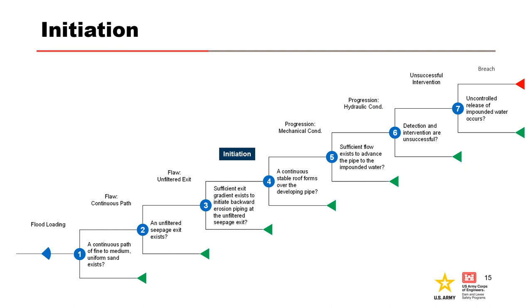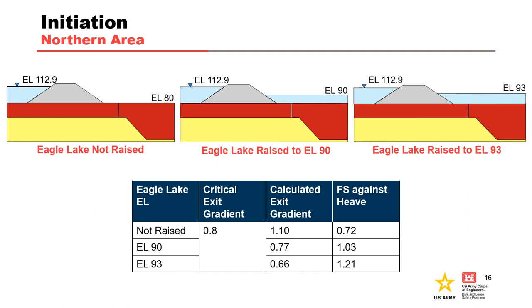We'll evaluate how the emergency efforts affected the likelihood of initiation of backward erosion piping. Prior to the flood event, the Vicksburg District performed an under-seepage analysis to determine the expected factor of safety against heave based on the forecasted flood elevation and different land-side water elevations to account for the ability to raise Eagle Lake. In the northern area, these calculations did not include the construction of an emergency berm, but were evaluated to determine whether the risk due to backward erosion piping could be sufficiently reduced without additional flood-fighting measures. The factor of safety against heave with Eagle Lake at its normal water level was 0.72, with a calculated gradient of 1.1, well above the critical gradient of 0.8 — an expected result that aligned with the observed poor performance during past flood events.